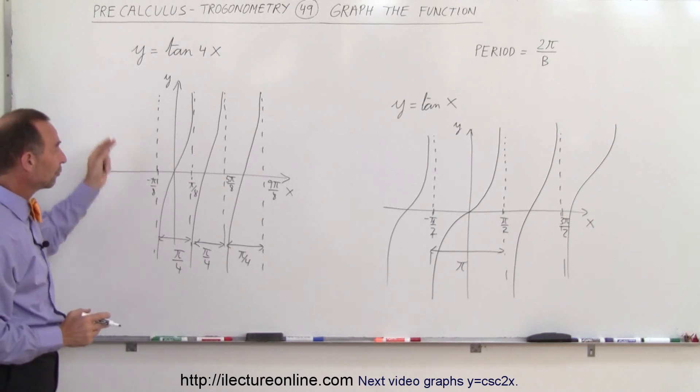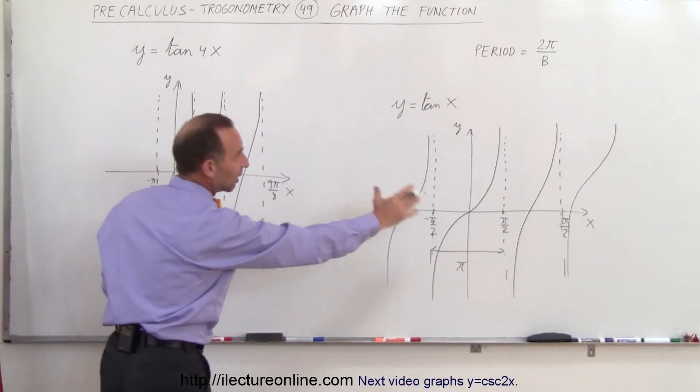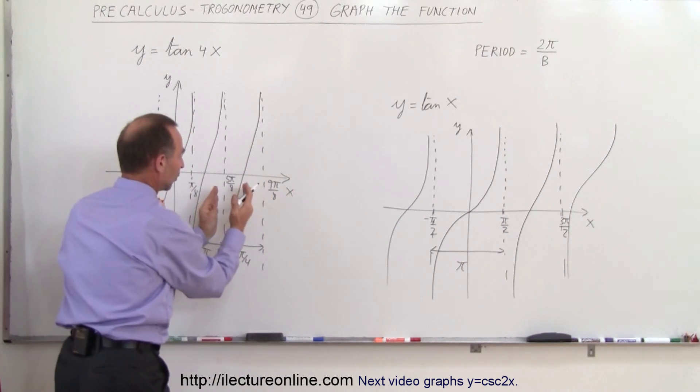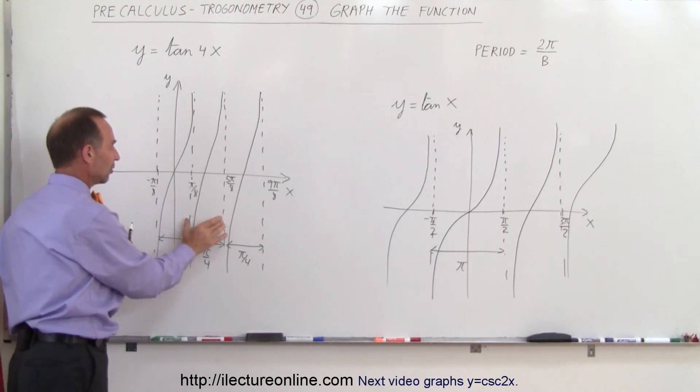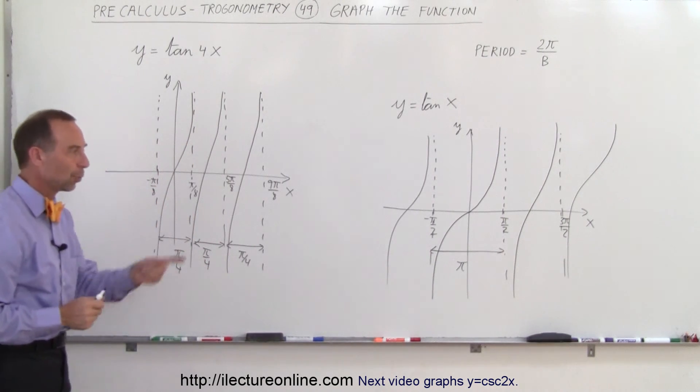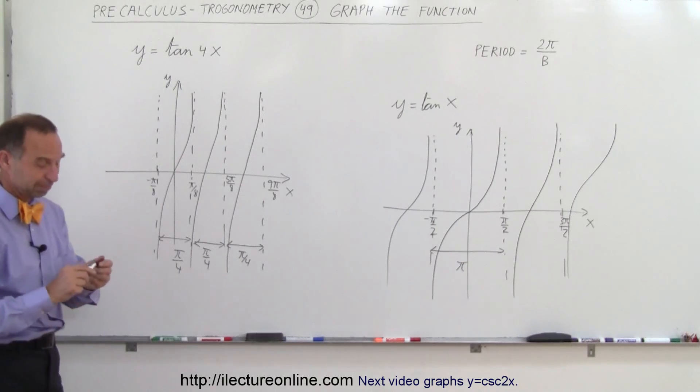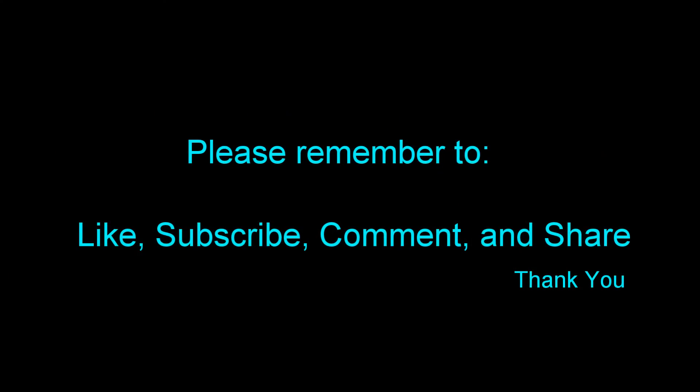and so here we have y equals the tangent of 4x, it looks exactly the same as the tangent of x, except the period is only one fourth as wide, and you can see that everything is squished together a lot more than it was over there, and that's how we do that. Thank you very much.